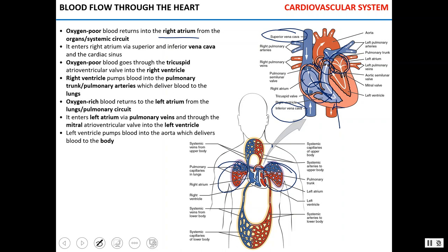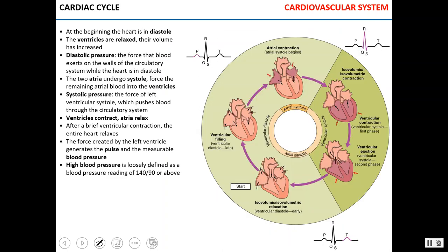The left atrium pumps blood into the left ventricle via the mitral valve, and from the left ventricle blood is pumped through the aortic valve into the aorta. This oxygenated blood from the left ventricle delivers oxygen to the rest of the body.